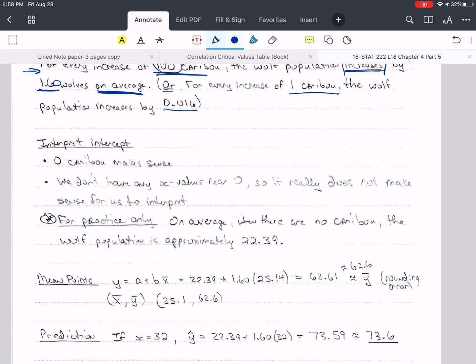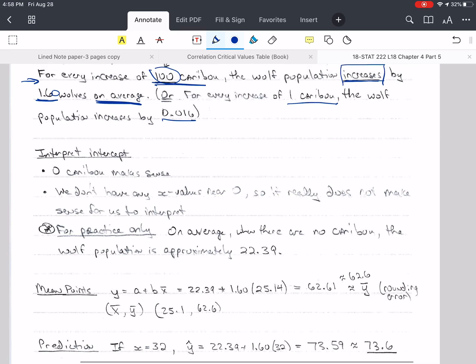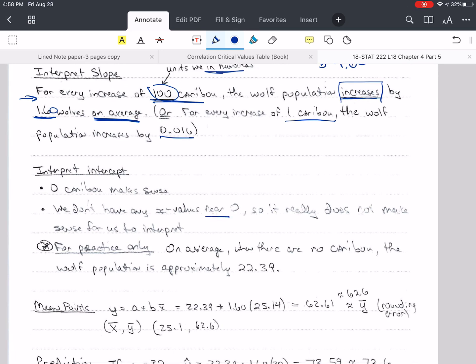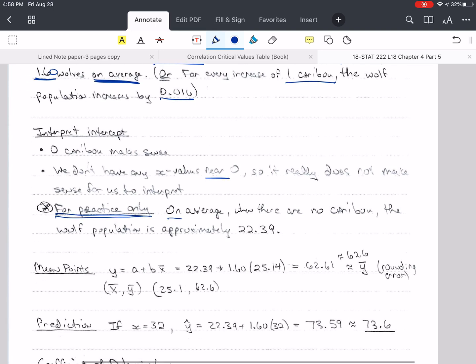Interpret the intercept. Zero caribou does make sense, but we don't have any x values near 0. So really, it doesn't make sense for us to interpret this at this point, but I'm going to for practice only. On average, when there are no caribou, the wolf population is approximately this. So the sentence is: On average, when there are zero units of x, then the y variable is approximately a, which is 22.39. This would say there are 22 wolves without any caribou. We may not find that realistic if that's what they primarily eat.